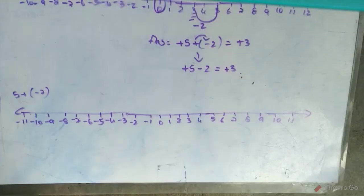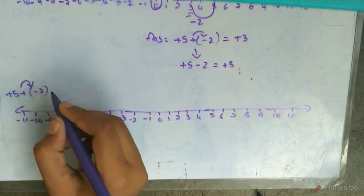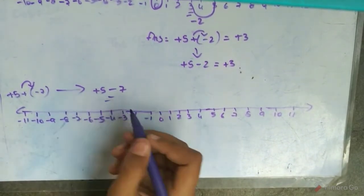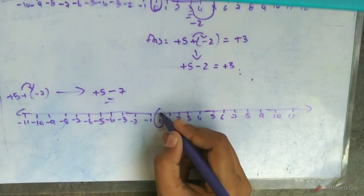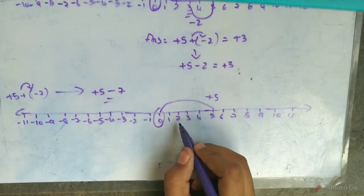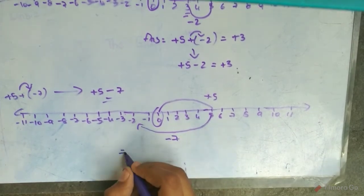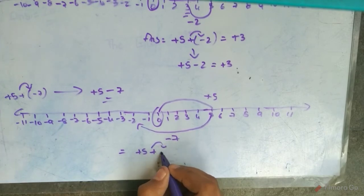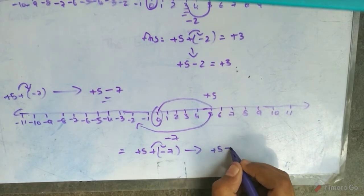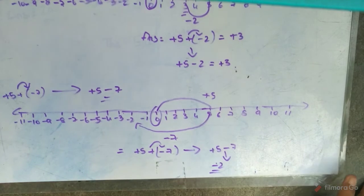Let's go to the fourth Roman. Here we have to do: plus 5 plus of minus 7. Simplify first — plus of minus is minus, so it becomes plus 5 minus 7. We start from 0, move plus 5, then minus 7 steps. The answer is: plus 5 plus of minus 7 equals plus 5 minus 7 equals minus 2.